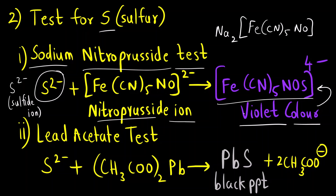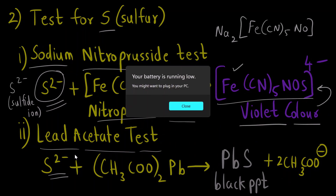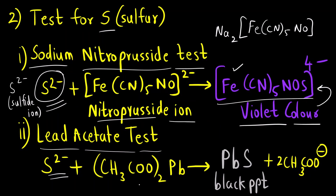Questions can be asked about either the color of this complex, its formula [Fe(CN)5NOS]2−, or which element it tests for — which is sulfur. The second test for sulfur is the lead acetate test. You take the extract and add lead acetate, Pb(CH3COO)2. You get a grayish-black precipitate, which confirms the presence of sulfur.